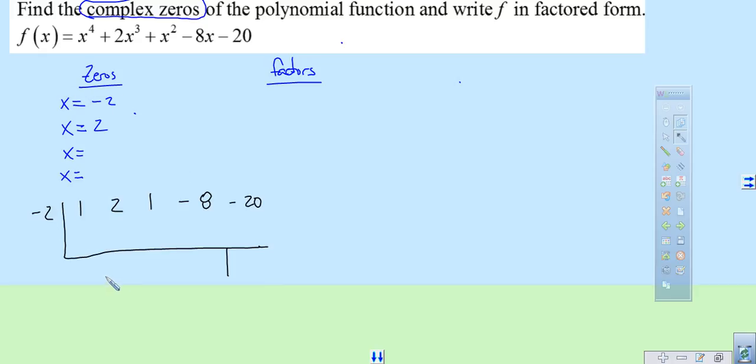And in this case here, we take our zeros. Our first zero that we have is negative 2. We take that guy. We bring down the 1. We multiply negative 2 times 1 is negative 2. Put the number right there. And we add. That gives us zero. We take negative 2 times zero. We put it right there. We get zero. We add. That gives us 1. We take negative 2 times 1. We put it right there. That's negative 2. We add. We get negative 10. We take negative 2 times negative 10. We put it right there. We get positive 20. We add. We get a remainder of zero.